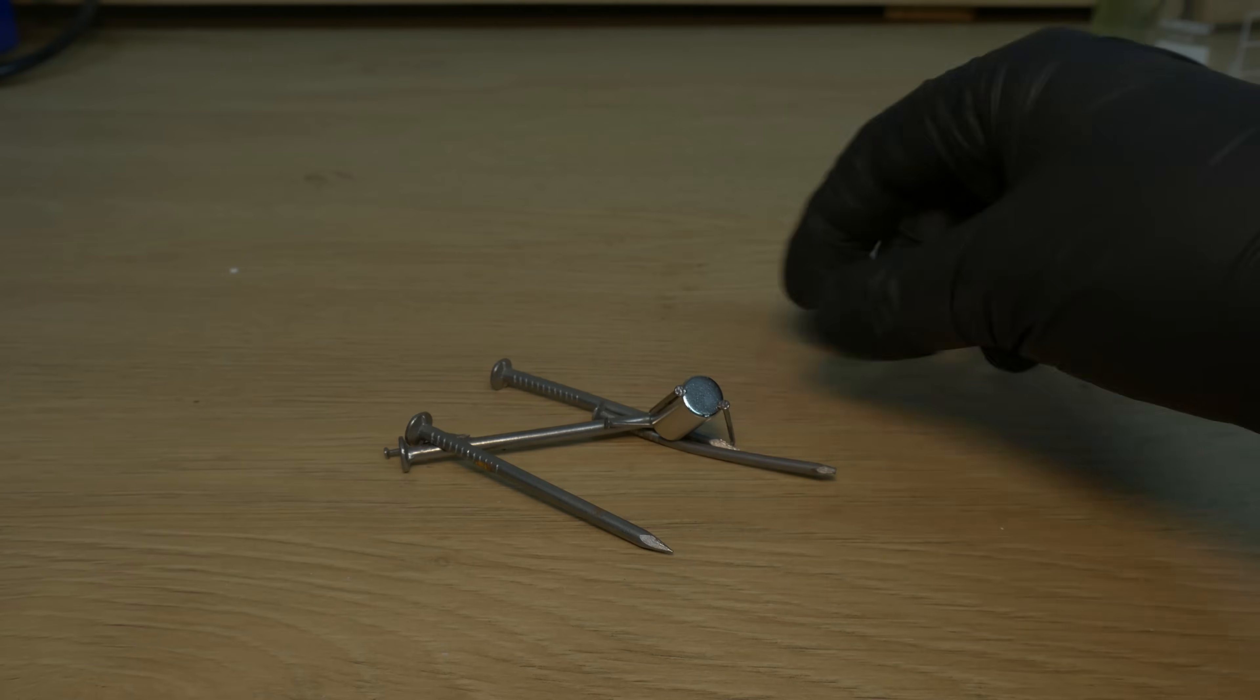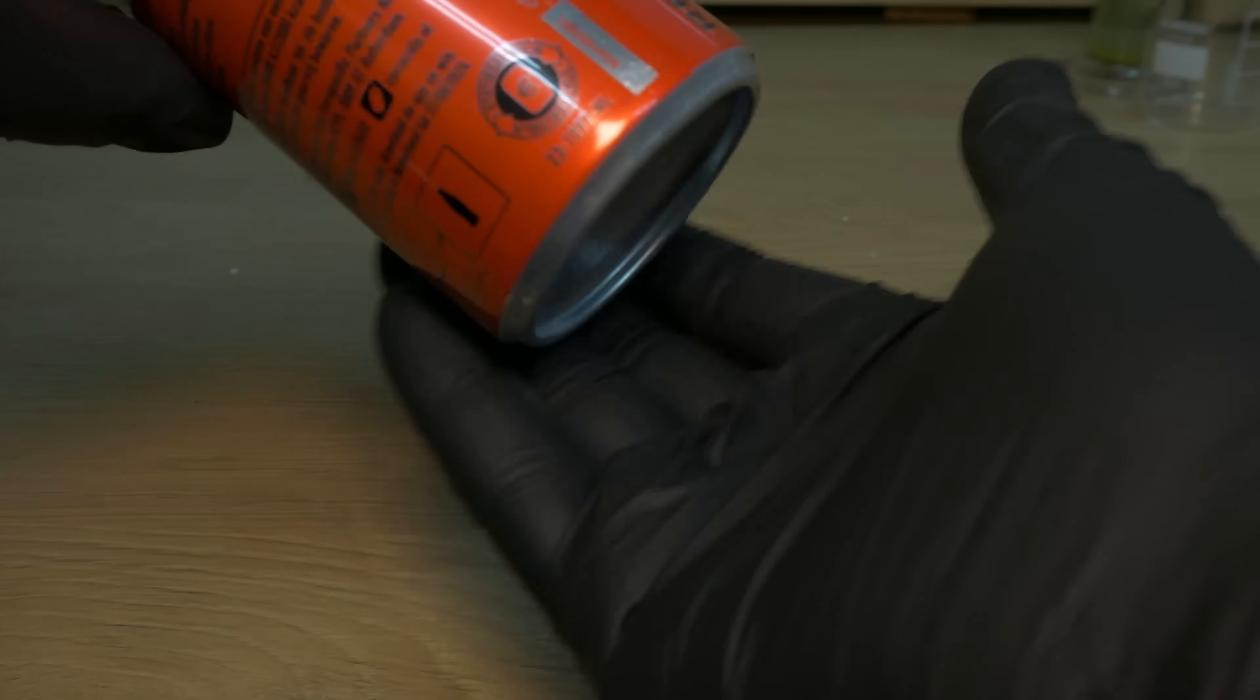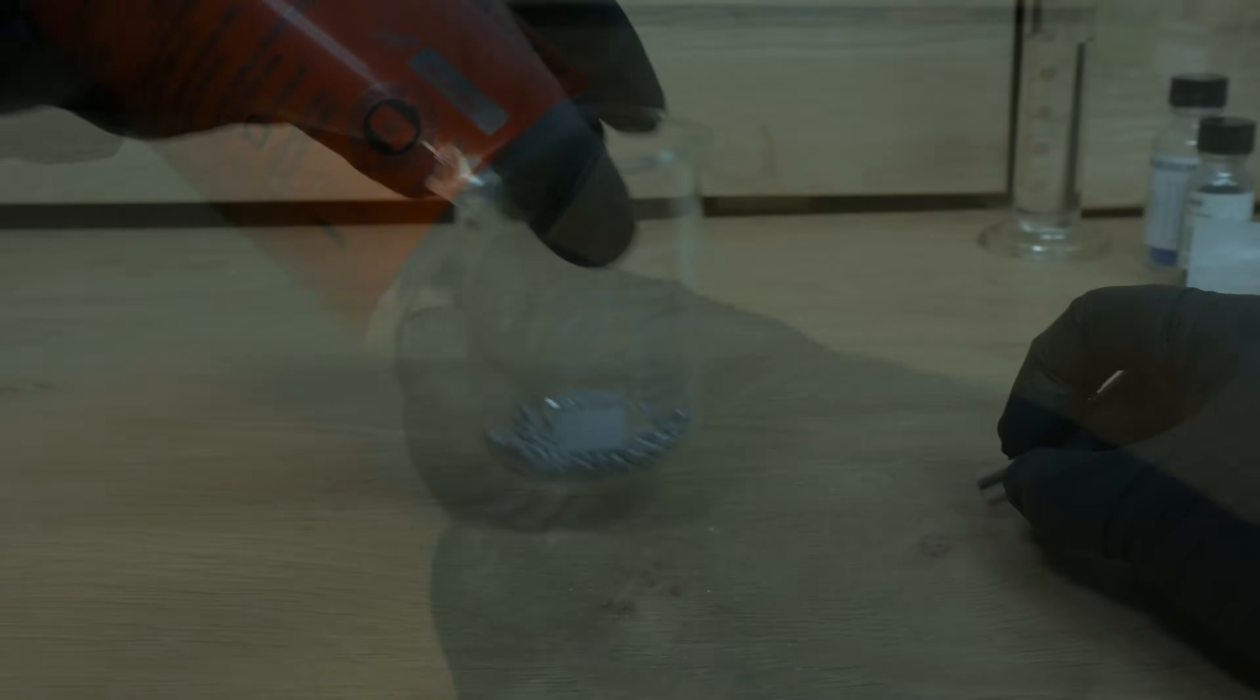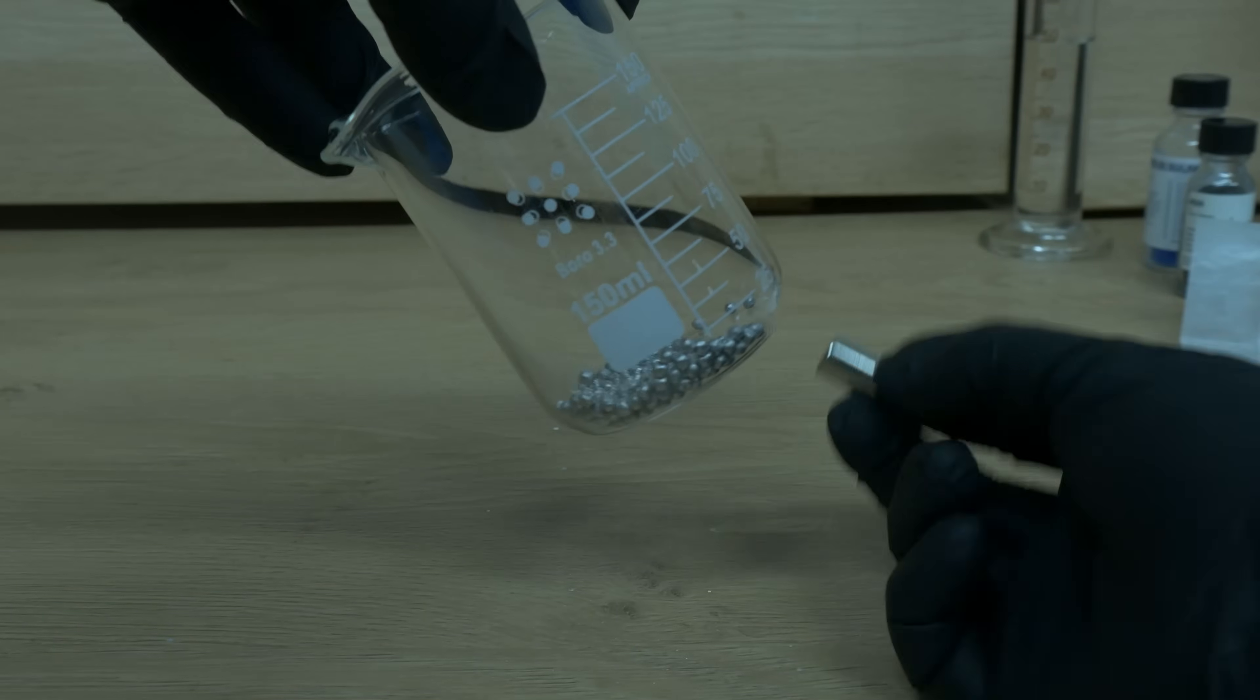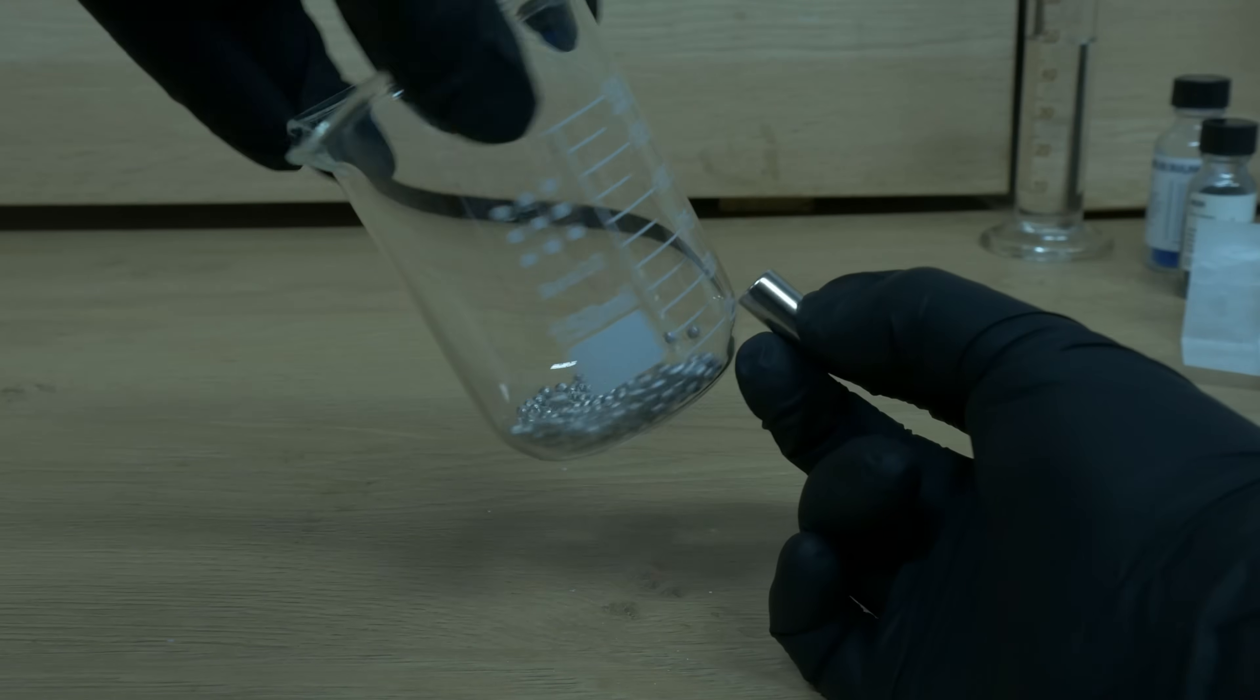We're told that only iron is magnetic. So your poor soda can, made of aluminum, doesn't stand a chance. But is it true that only iron is magnetic? And can we pull off a little science trick to make a normally non-magnetic metal like magnesium act magnetic?